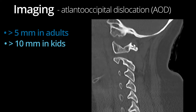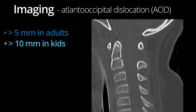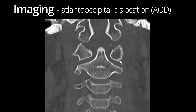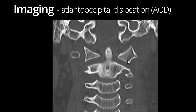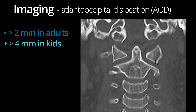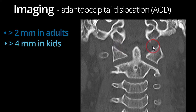There also is a component of Type 1 dislocation, with the head and the occipital condyles shifted forward in relation to the atlas. The same is true on the other side, with the occipital condyles shifted forward in relation to the atlas. Always look at the atlanto-occipital joints closely on all projections. The atlanto-occipital joints should be symmetric and should not measure more than 2 mm in adults and 4 mm in kids. The atlanto-occipital joints in this case are asymmetric and measure far more than 4 mm.